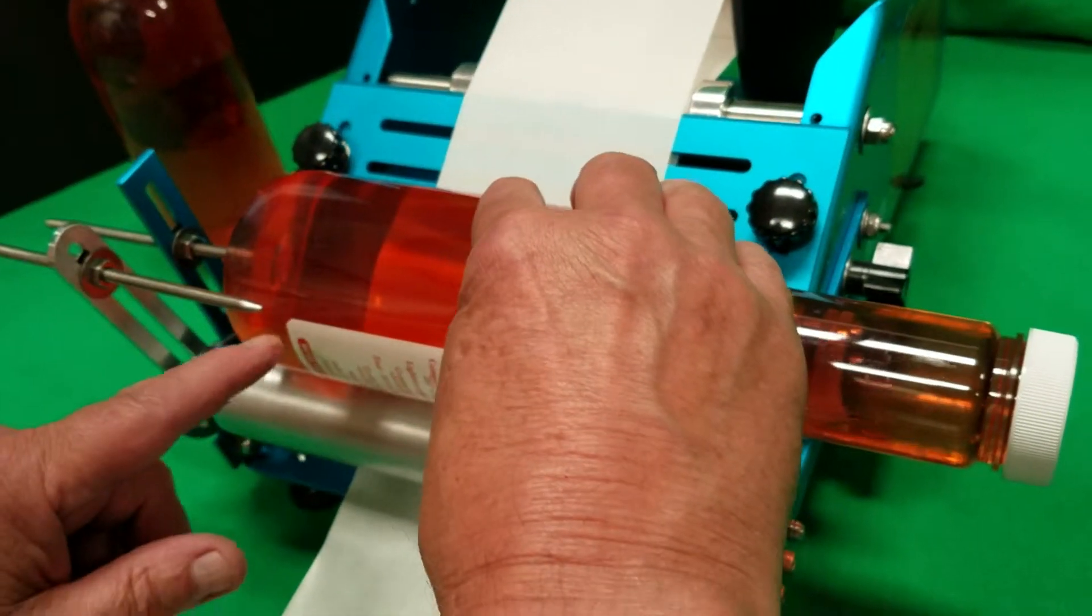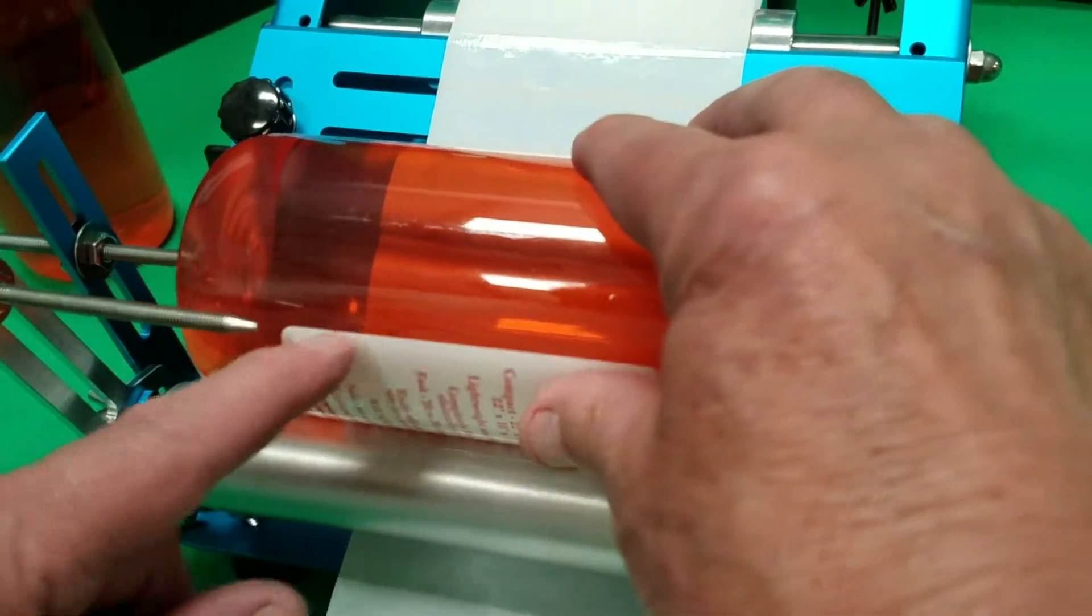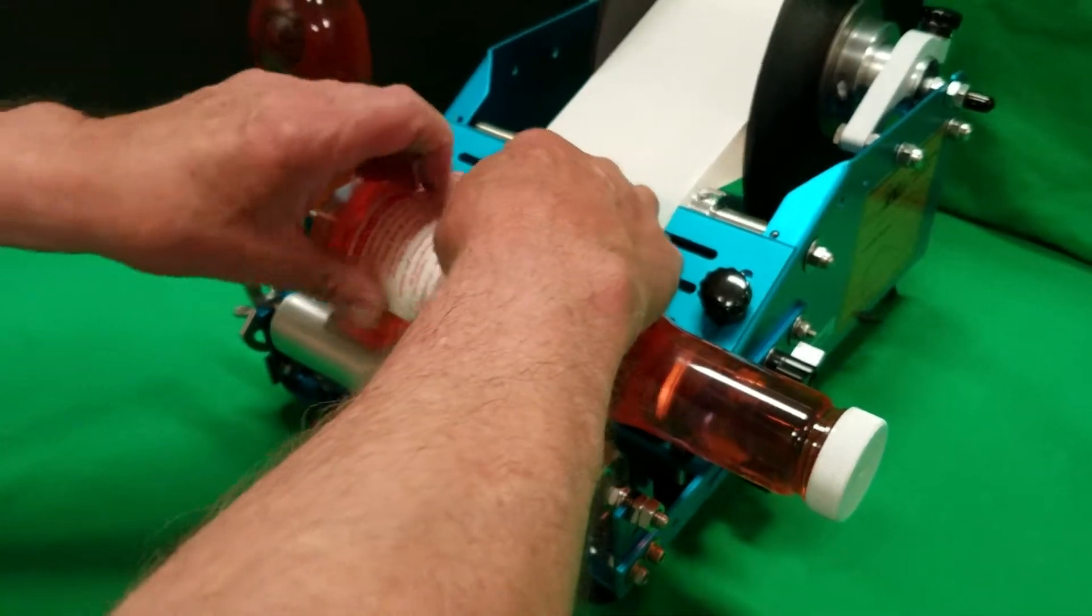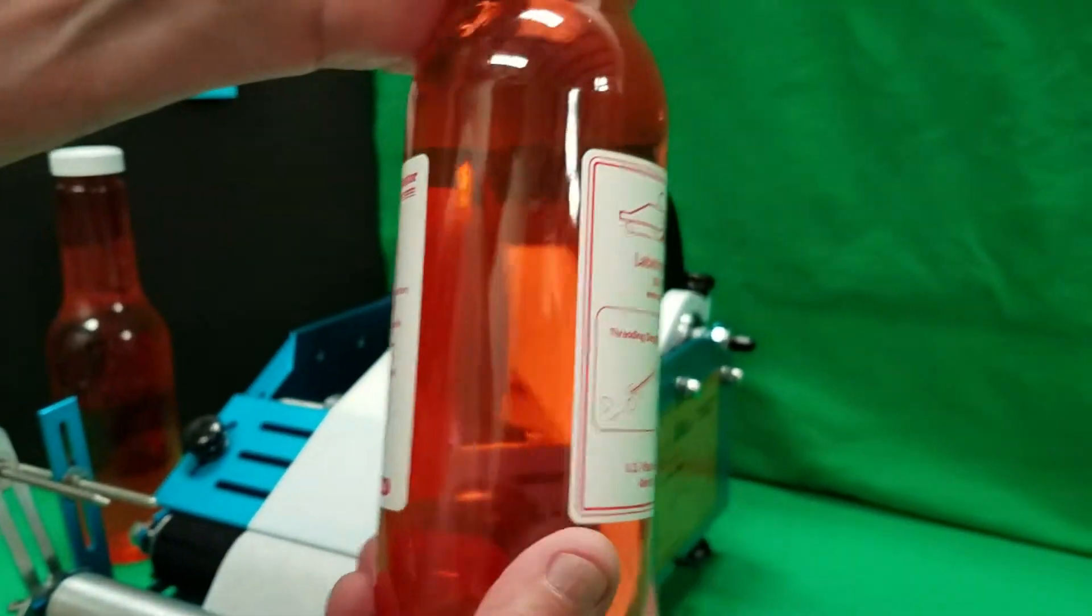And then we'll bring this up to the gap guide, the leading edge of the already applied label, and we'll apply the back label. And what that does is it gives you the proper gap between the label on the bottle.